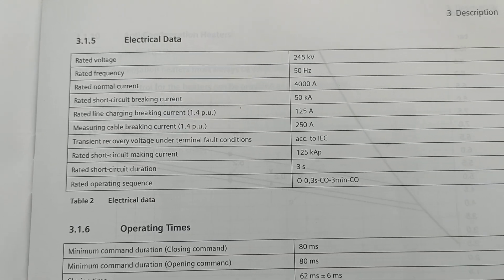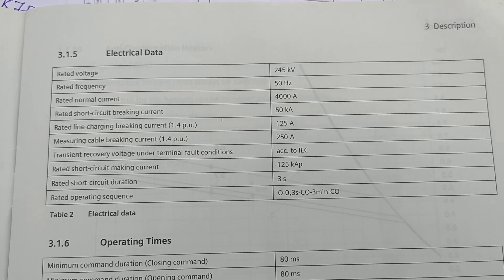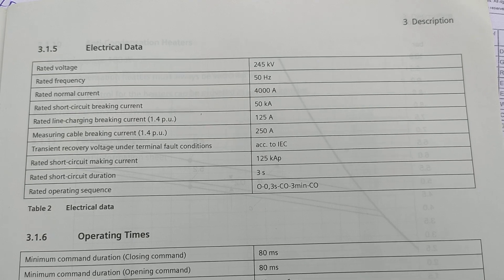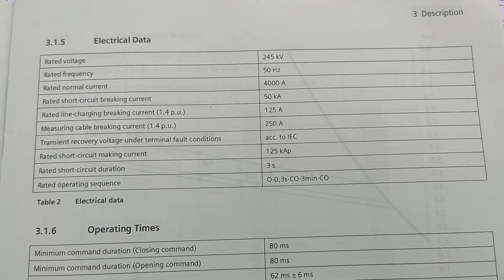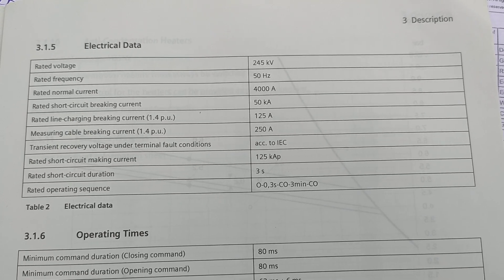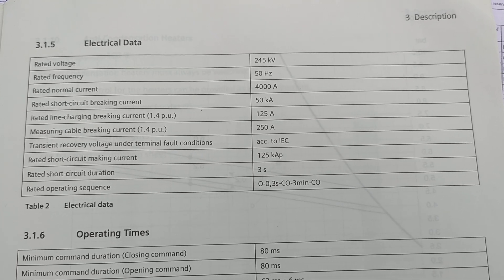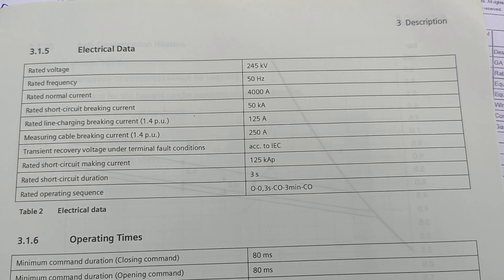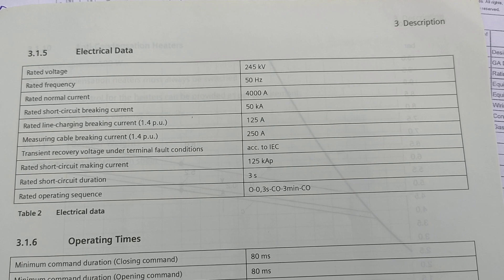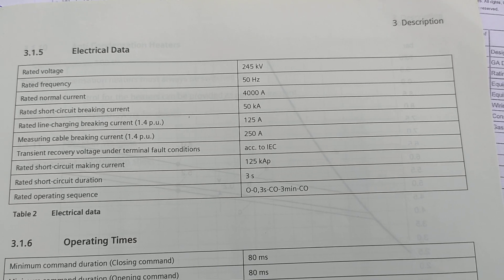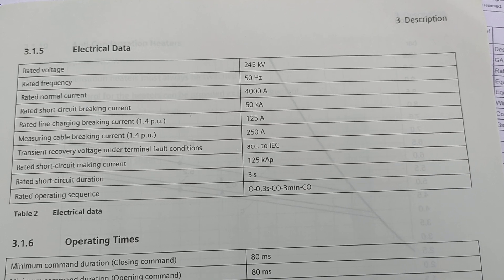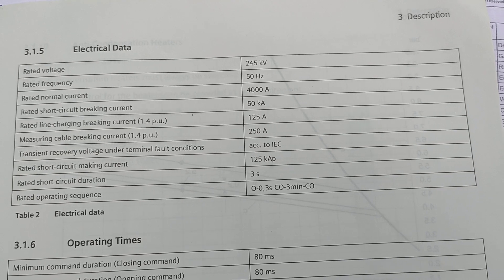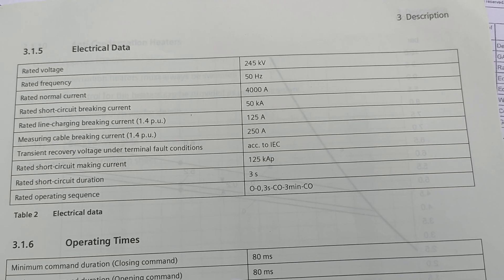The electrical data given in the instruction book: rated voltage 245 kV, frequency 50 Hz, rated normal current 4000 A, rated short circuit breaking current 50 kA, rated line charging breaking current 125 A, measuring cable breaking current 250 A, and rated short circuit making current 125 kA peak.